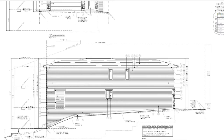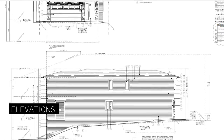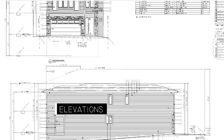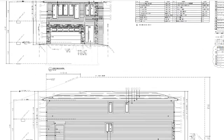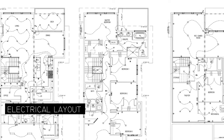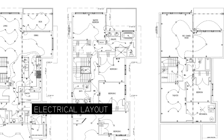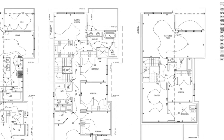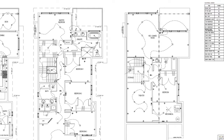Elevation drawings should also be included, and that will give us information about window openings, exterior materials, building height, and roof slope. We should also include an electrical floor plan that will show us the location and number of lights, switches, outlets and how they're supposed to be interconnected.